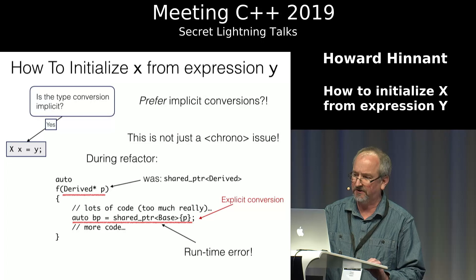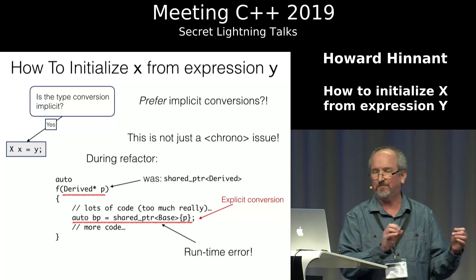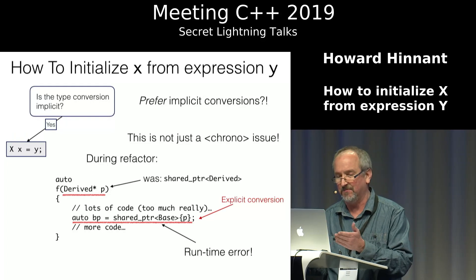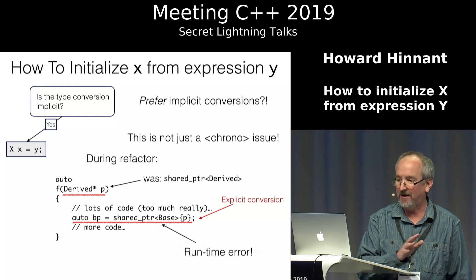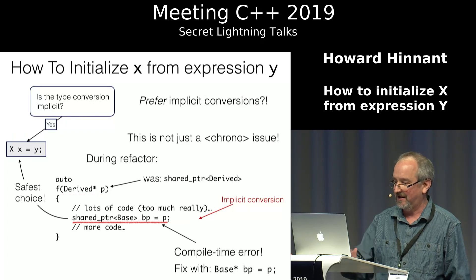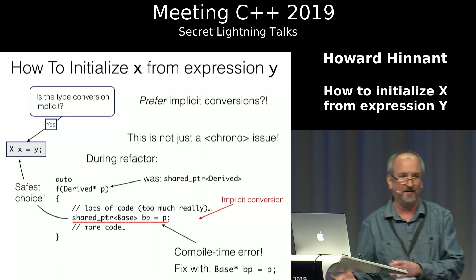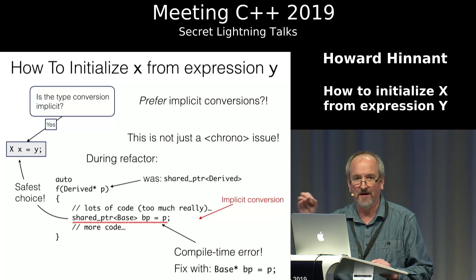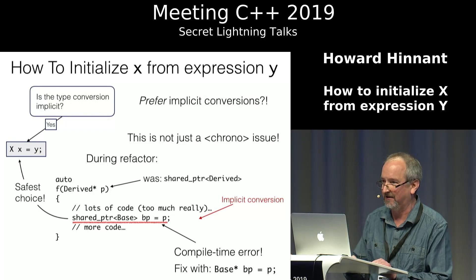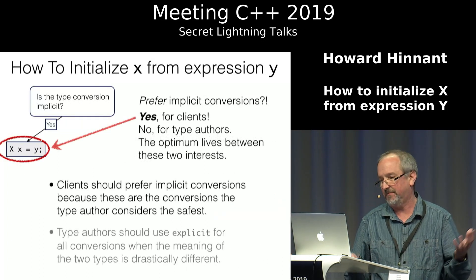You might decide no, and change the parameter from shared pointer to derived to a raw pointer to derived. Everything compiles, but it doesn't work: a statement in the middle of the function happily constructs a raw pointer into a shared pointer to base using explicit syntax — a runtime error. Had I used `shared_ptr<Base> bp = p`, implicitly converting from shared pointer to derived to shared pointer to base, then after the refactoring, that line would refuse to compile, reminding me I need to fix it too.